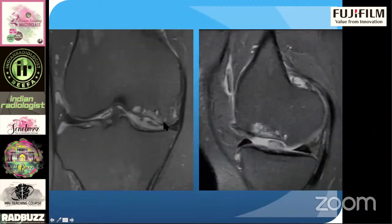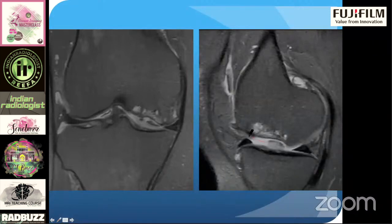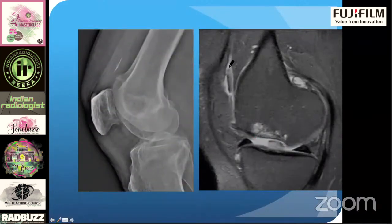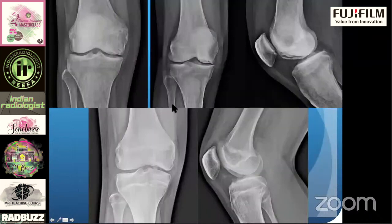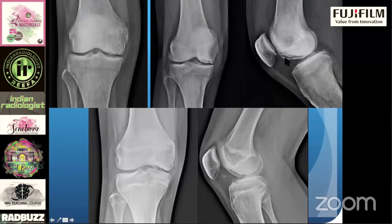On MRI, you can see the irregularity and a small osteochondral fragment in situ, but the other fragment is missing — corresponding to the displaced fragment on the X-ray. These are more examples of osteochondritis dissecans: sometimes the fragment looks stable, but you cannot be 100% sure without MRI. In this case, you can be 100% sure it is unstable because the fragment is detached from the parent bone with a radiolucent gap — an unstable osteochondritis dissecans.